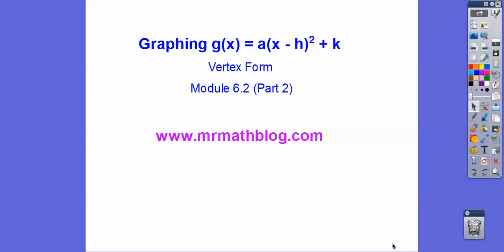This lesson is graphing g of x equals a times x minus h squared plus k. We learned in the last lesson that k made the graph go up and down, and h inside the parentheses made it go left and right. This is called vertex form, so in the next lesson we'll do what's called standard form.